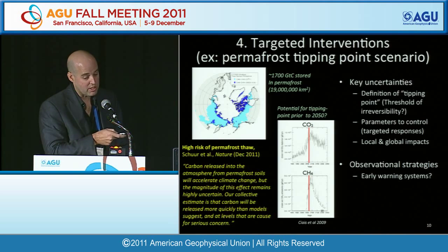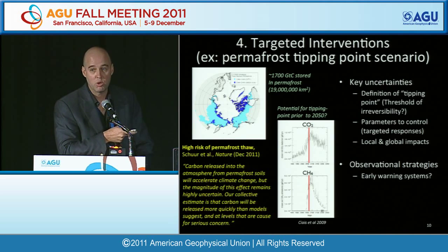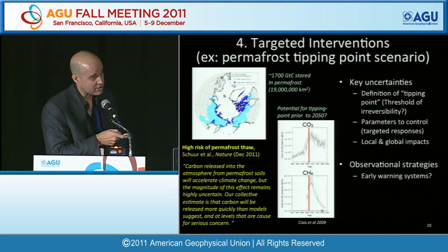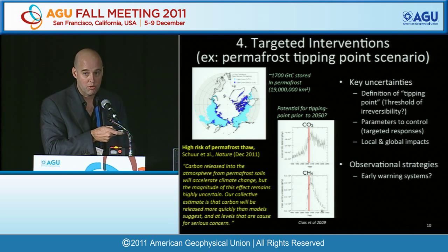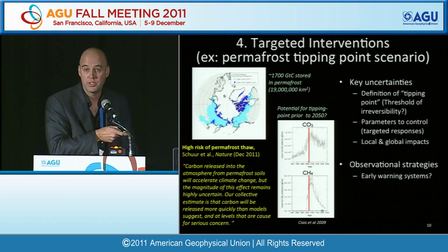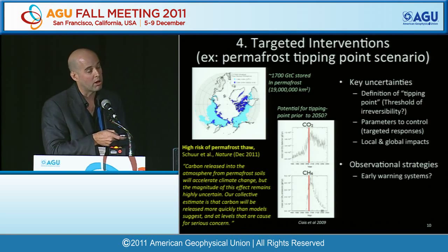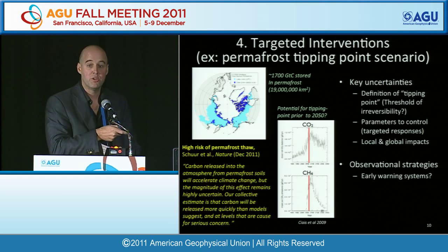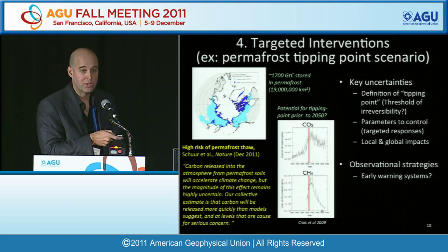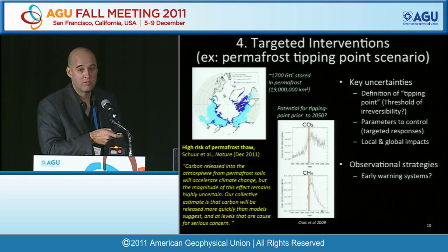One question from this study is, what's the definition of a tipping point? Is it simply the transition from a net sink to a net source — which I argue is already underway — or is it the threshold of irreversibility, where one triggers deep and sustained microbial decomposition releasing methane that we can't turn off for 100 years? We'd like to couple with existing work on Arctic carbon reservoir vulnerability and apply the question: if you were trying to intervene, what parameters would you control, what could you monitor, and what are the local and global impacts?